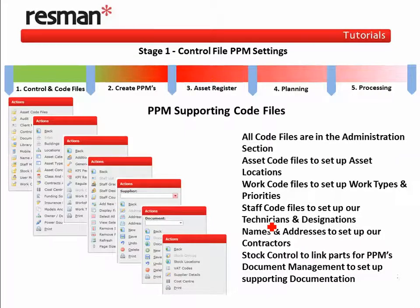The code file area is where we set up and maintain all our supporting code files for asset management, work processing, staff details, names and addresses for contractors — as we can issue PPMs to contractors as well as our in-house colleagues. If you utilise the stock control module, you can also link stock parts required for PPMs.